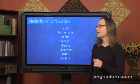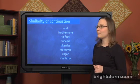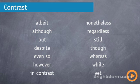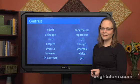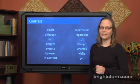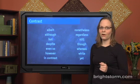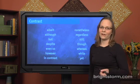Another set of words — among them the one we just saw in the Marcus example — are the contrast words. There are a lot more here: 'albeit,' 'although,' 'but,' 'despite,' 'even so,' 'however,' 'in contrast,' 'nonetheless,' 'regardless,' 'still,' 'though,' 'whereas,' 'while,' and 'yet.' So when these words pop up on the SAT, you'll expect that the ideas being connected with them are contrasting or contrary to each other.